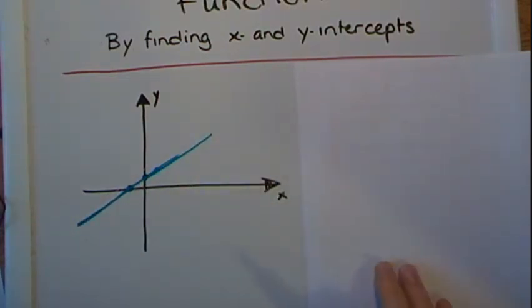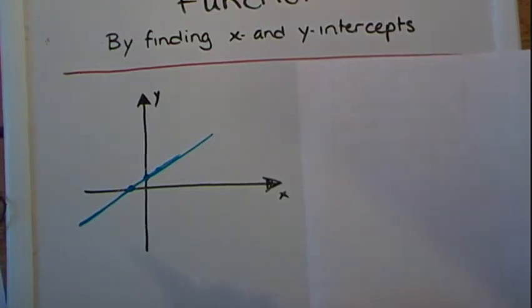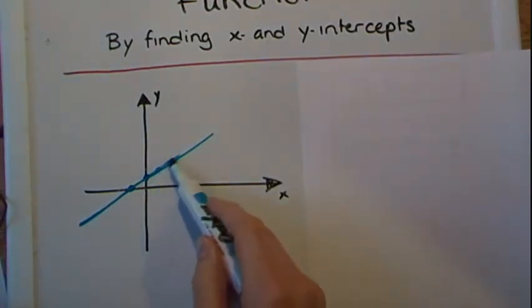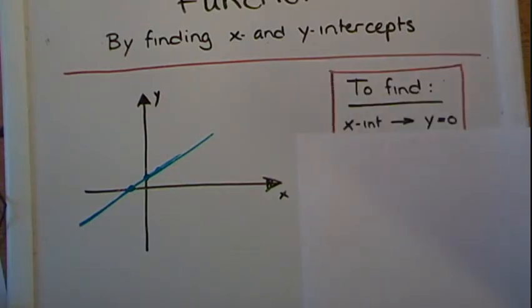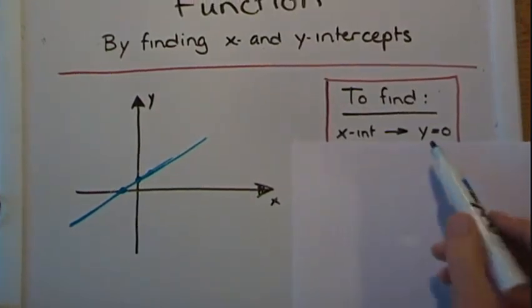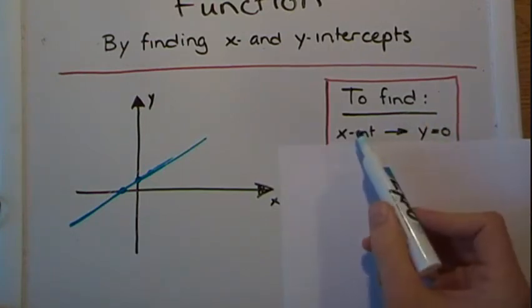So basically what we do is when we have the equation, to find x intercept, we replace y equals zero and then we solve for x.